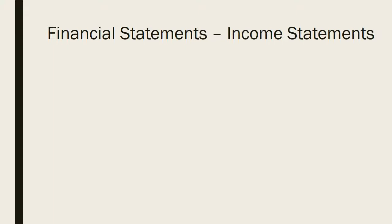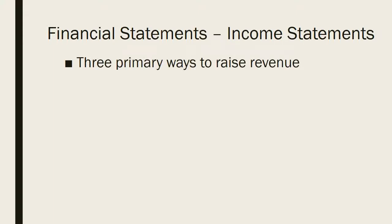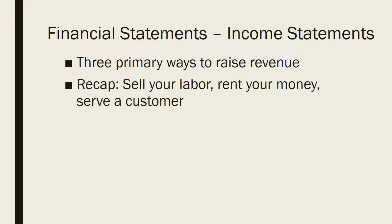On the income statement, there are three primary ways to raise revenue. They are: to sell your labor as an employee, to rent your money and gain interest on your investments, or to serve a customer — we tend to call that entrepreneurship. For example, to sell your labor, you could be a salaried employee who goes to work every day and sells your time in exchange for money. If you have assets, you could rent your money by buying a bond and lending that money out. Third, you could serve a customer — for instance, putting your house on something like Airbnb and renting it out to customers.